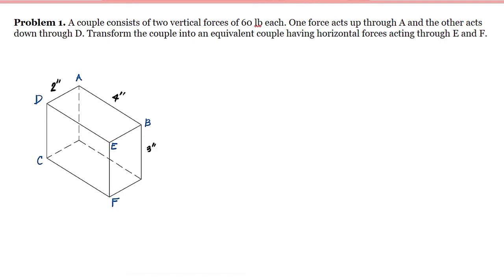So in this figure, if we translate it, it says that we have two vertical forces of 60 pounds each. One acts up through A, so at point A we have the upward force equal to 60 pounds. And the other acts down through D, so at point D we have downward 60 pounds.